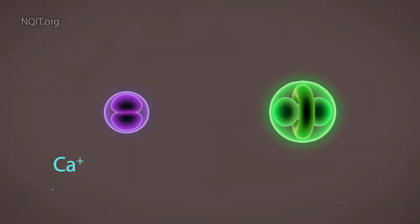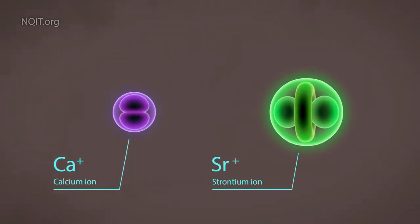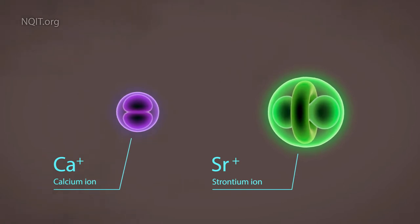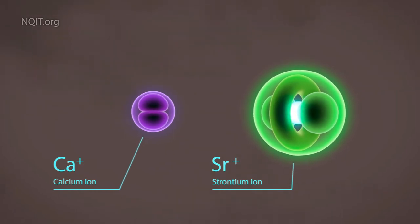An ion is a charged atom. Here we see two of them, a calcium and a strontium ion. They are superb controllable quantum systems and we'll see we can store information into either one.